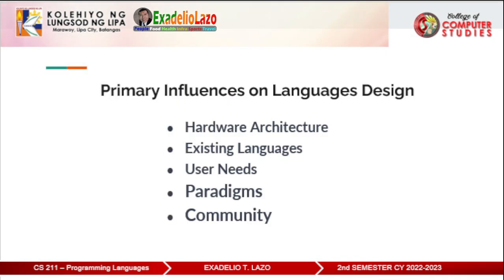What are the primary influences on language design? First, hardware architecture. Second, existing languages. Third, user needs. Fourth, paradigm. Fifth, community. Hardware architecture means the design of a programming language is often influenced by the hardware it is intended to run on. For example, languages designed for the x86 architecture may differ from those designed for ARM processors.